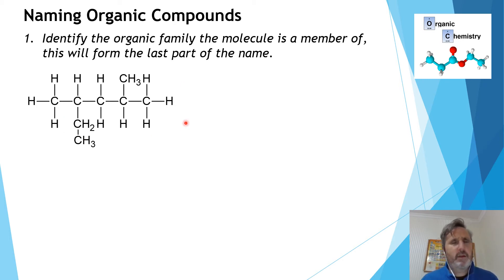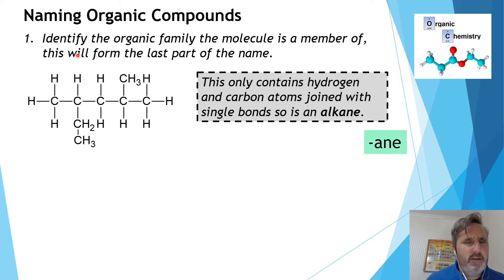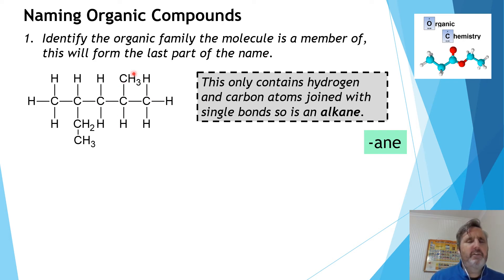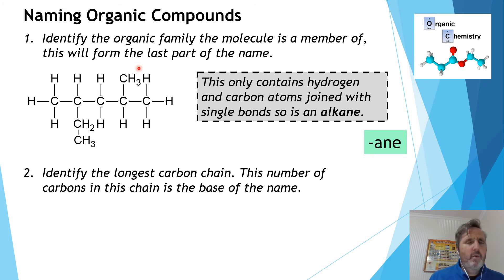The first step is to work out whether the molecule has any special functional groups. Does it have an O, an N, an S, a double bond? No — it only has carbons and hydrogens with only single bonds. So the end of its name is going to be '-ane'. That tells us whenever we see '-ane' at the end, the molecule only contains carbons and hydrogens.